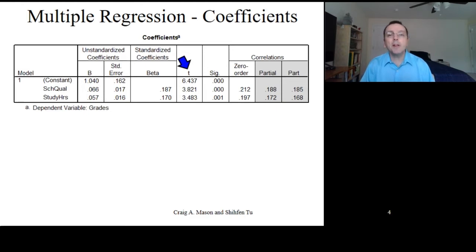So, for example, if we look at school quality, the unstandardized regression coefficient was 0.066, and the standard error for the regression coefficient was 0.017. If we divide 0.066 by 0.017, we get 3.821.